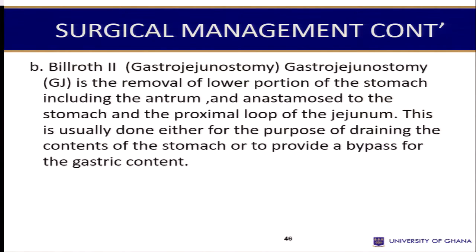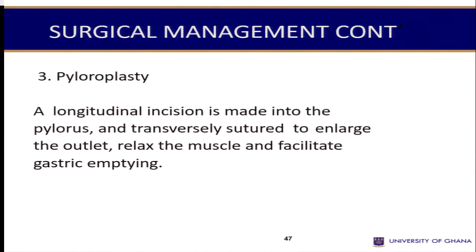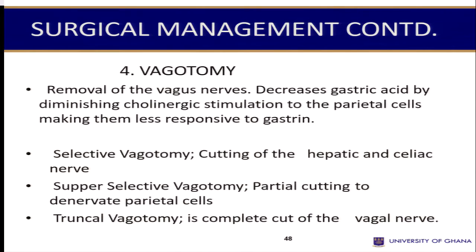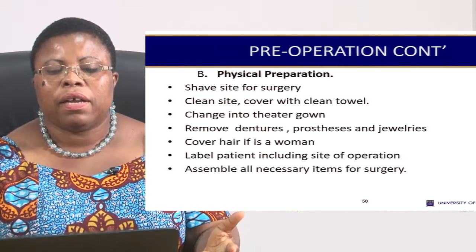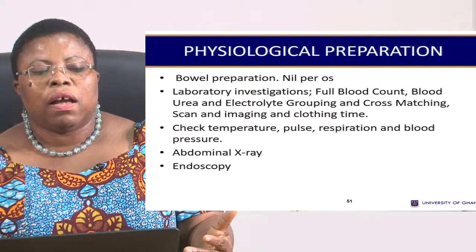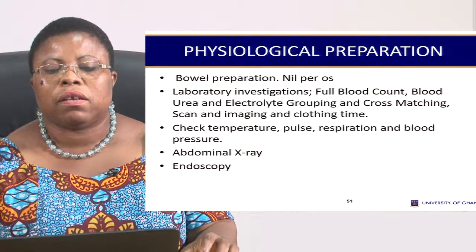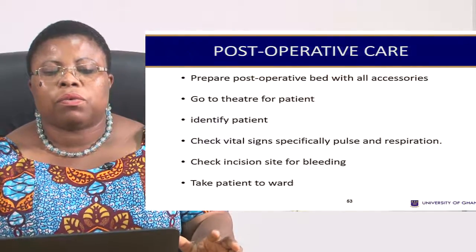The second type of surgery is also a gastroduodenostomy where the ulcer is at the duodenal area — the diseased parts are removed and the stomach is anastomosed to the duodenum. You can also do a plastic surgery of the affected area and perform a vagotomy if there is a nerve overstimulation issue. The preparation — psychological, physical, and physiological — are all things we have discussed, and whatever is specific to this condition, you add to it.